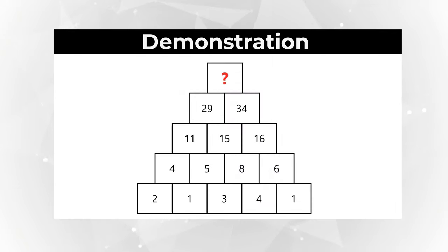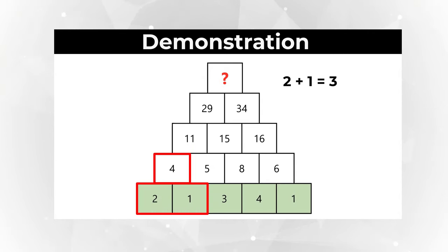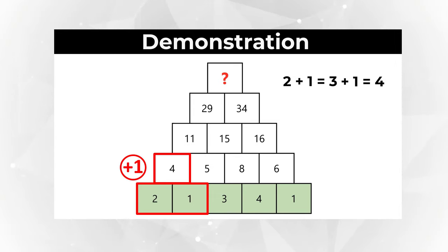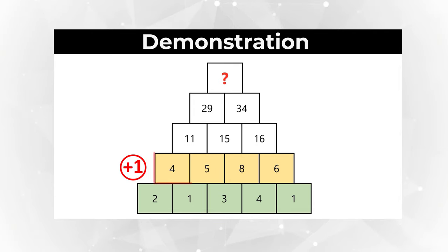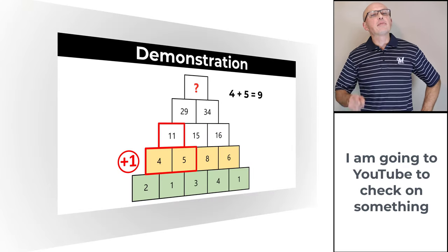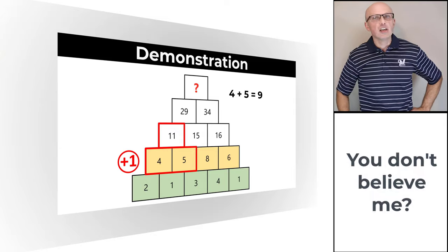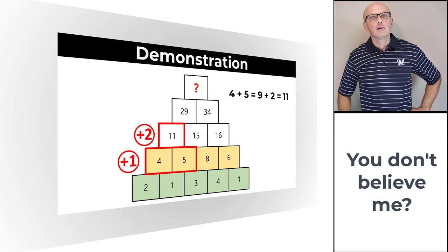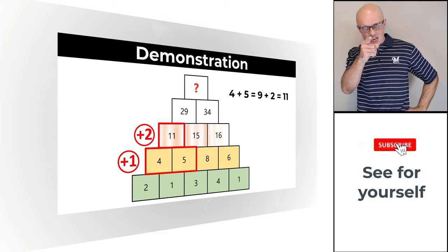Let me demonstrate. If we look at the numbers in the bottom left corner of the pyramid, you see numbers 2 and 1. Sum of 2 and 1 is 3. But then we add the value of the increment, which is 1, and the calculated value is 4. Let's continue with the sequence. Next set of numbers is 4 and 5. 4 plus 5 is 9. And then we need to add the value of the increment, which also increased by 1. So now instead of being plus 1, the increment is plus 2. 4 plus 5 plus 2 equals 11.